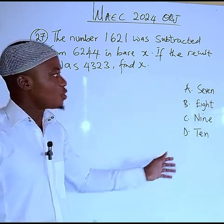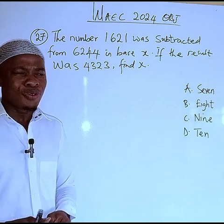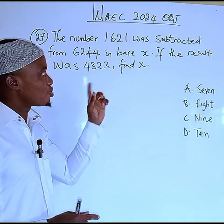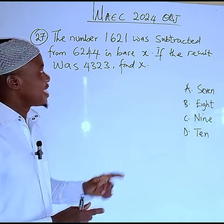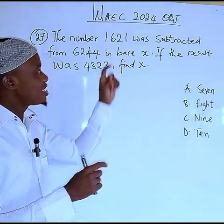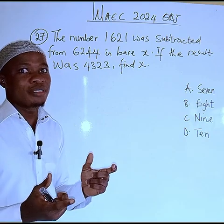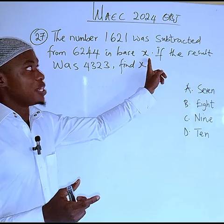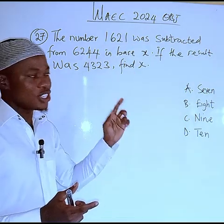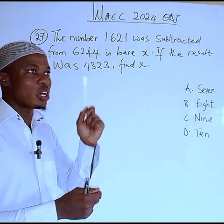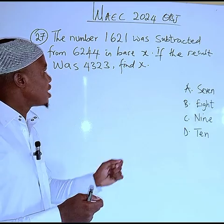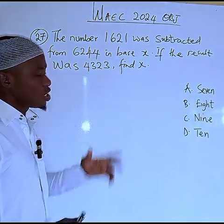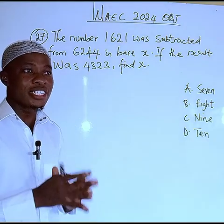Now, you may notice something from when I was reading this — I mentioned each digit one after the other, because I don't want to assume the base since it is unknown. That is why I read them individually: 1621, 6244, 4323.